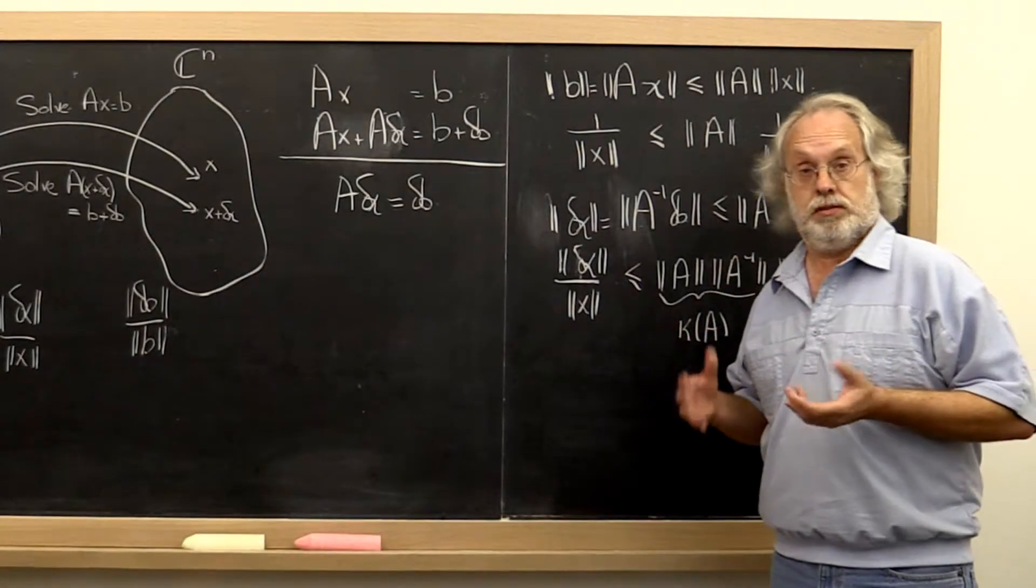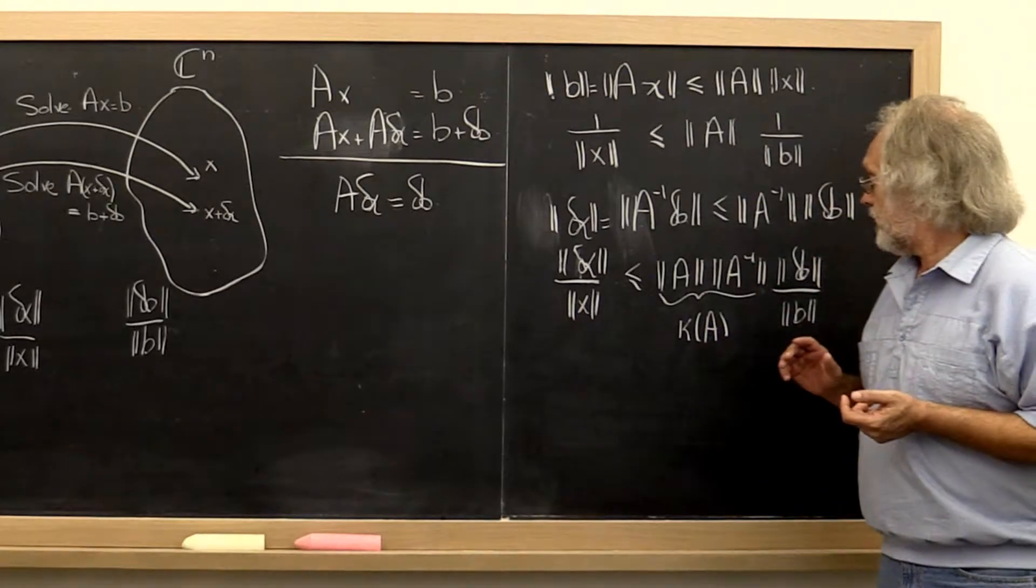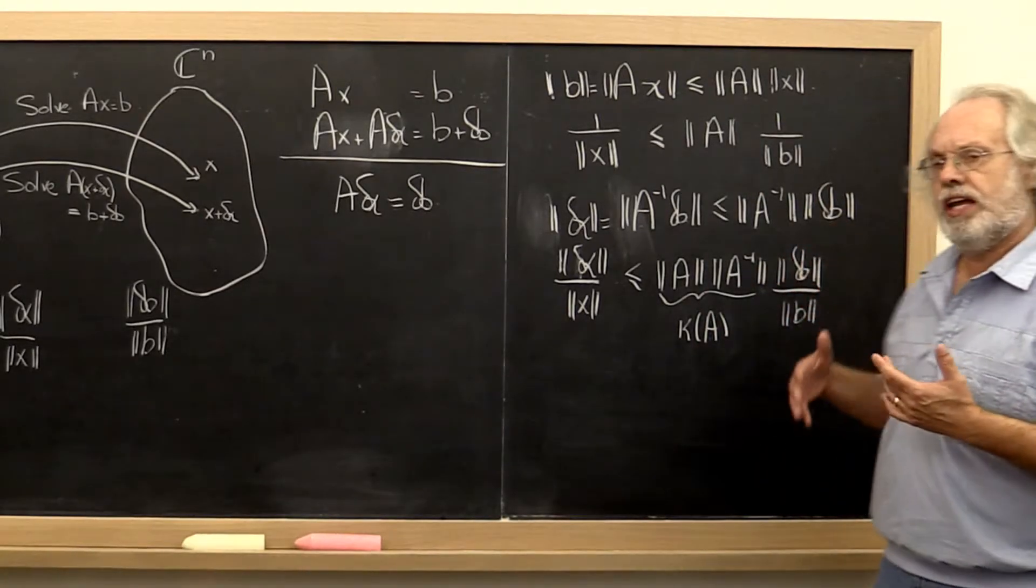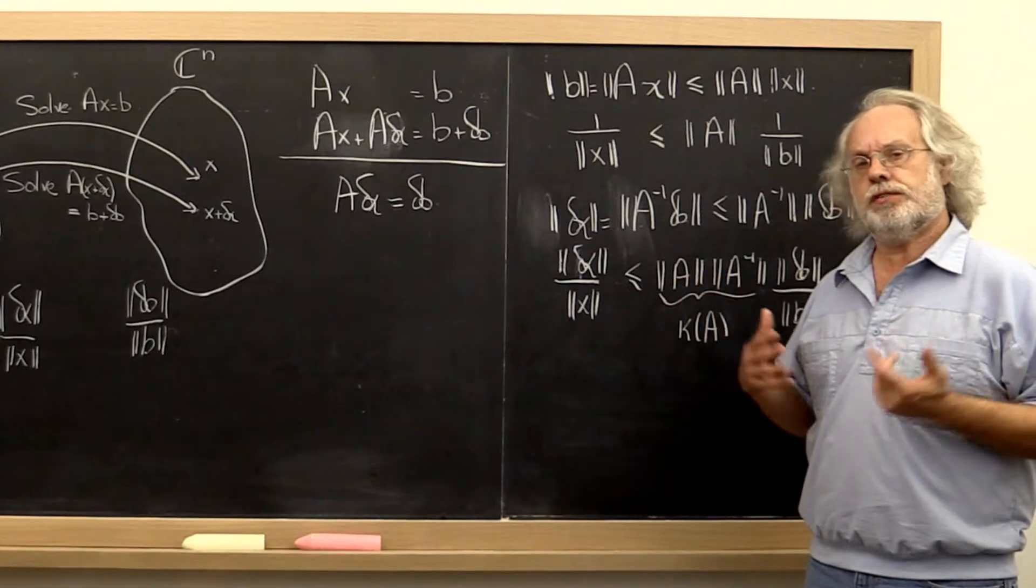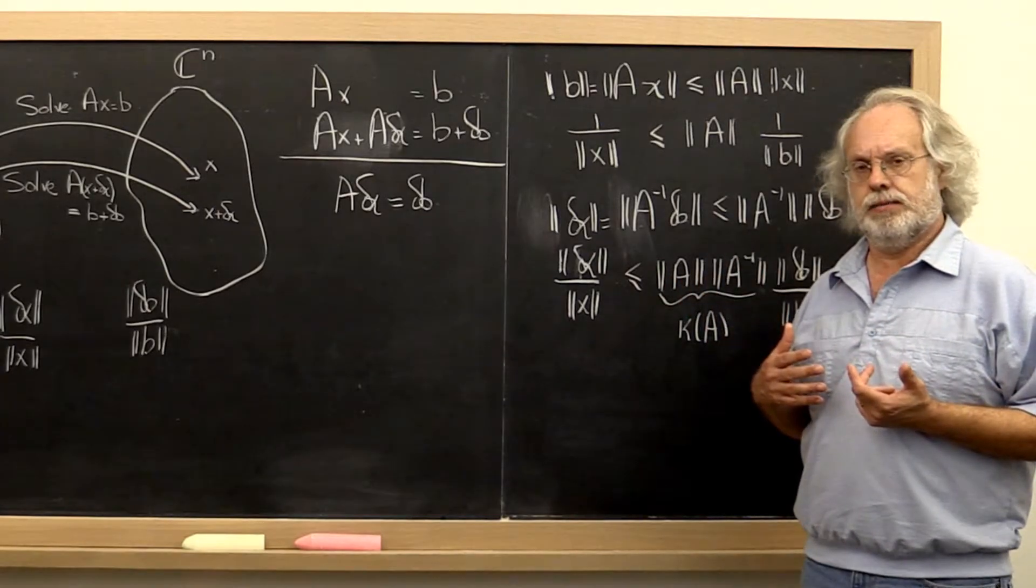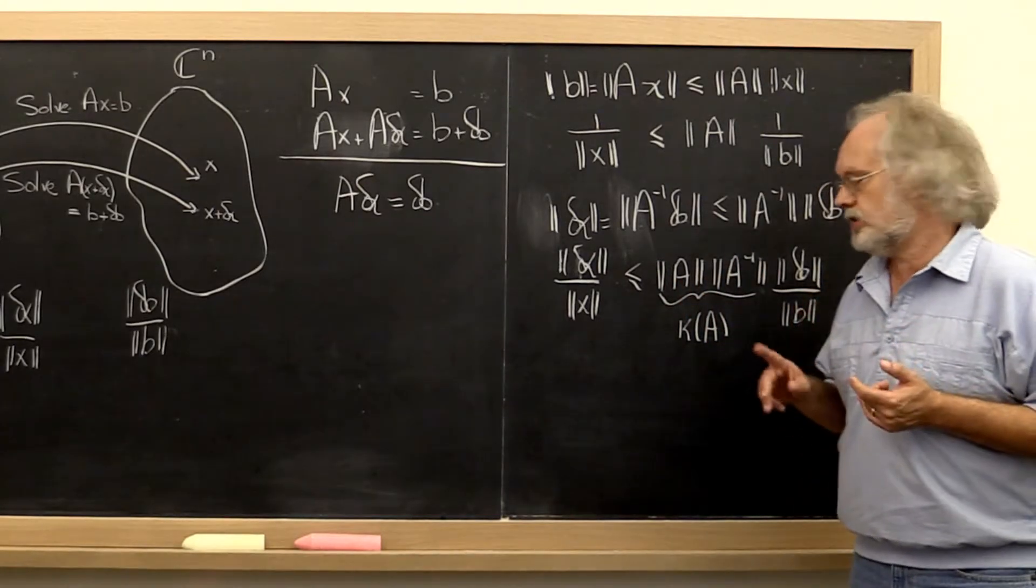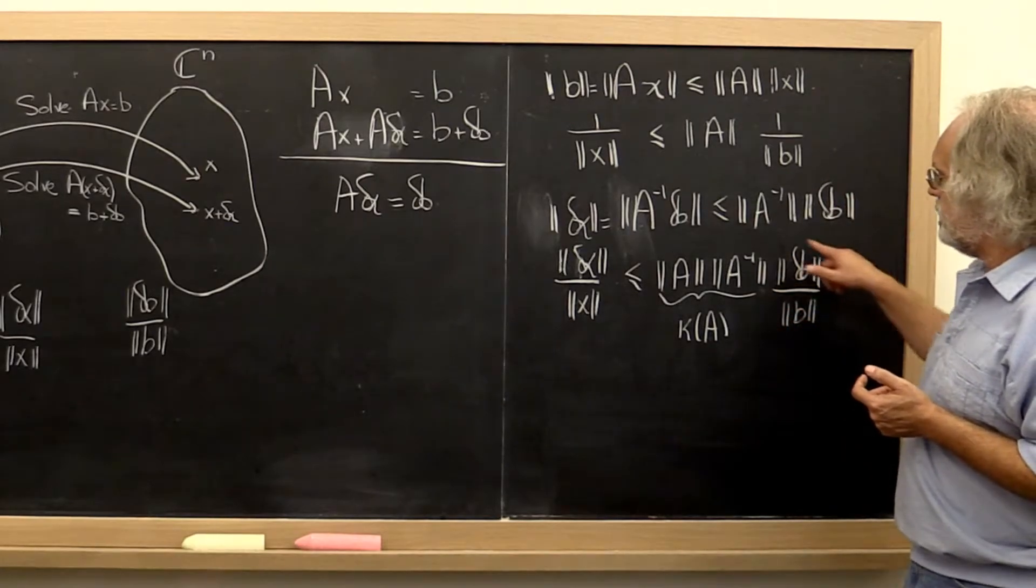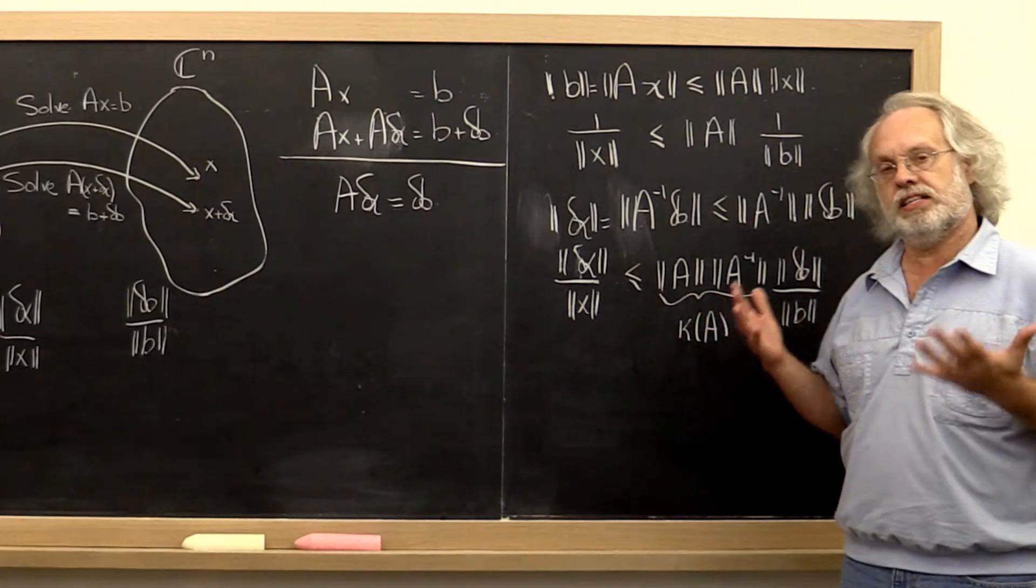How might we interpret this result? Well, what if you only had eight digits of accuracy in your right-hand side? What that translates to is this ratio being around 10 to the minus 8.